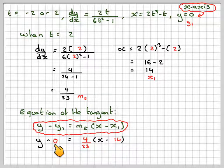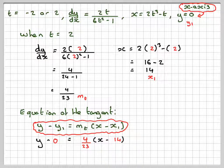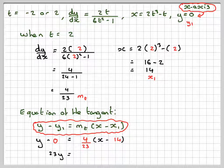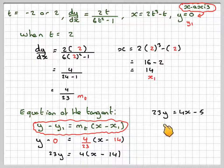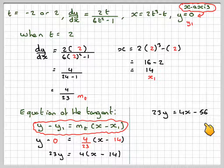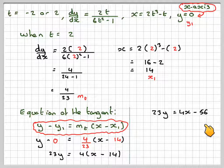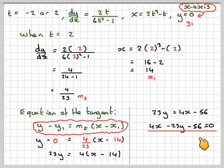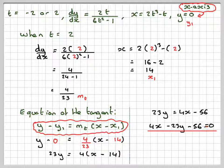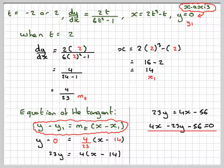Multiply this side by 23, so you get 23y, and then we get 4 times (x minus 14). 23y equals 4x, and then 4 times 14 is minus 56. Then writing everything on this side, I get 4x minus 23y minus 56 equals 0, the other equation of the tangent.